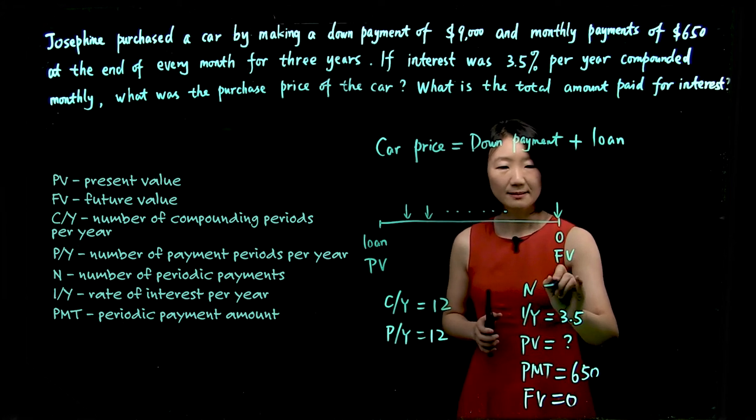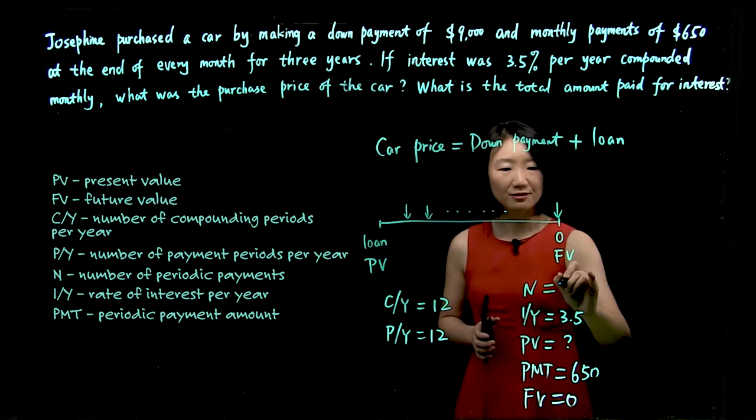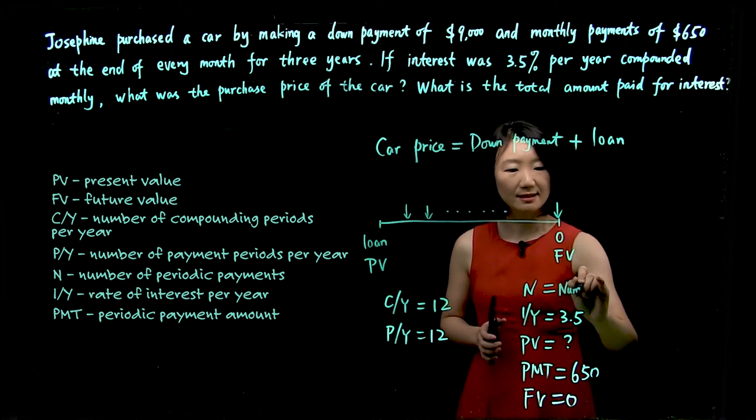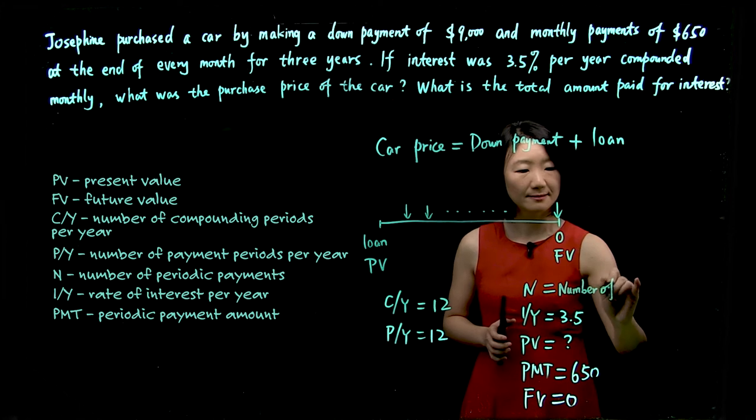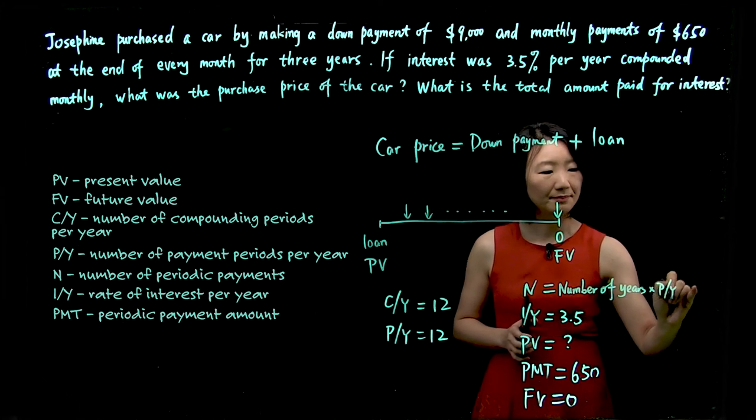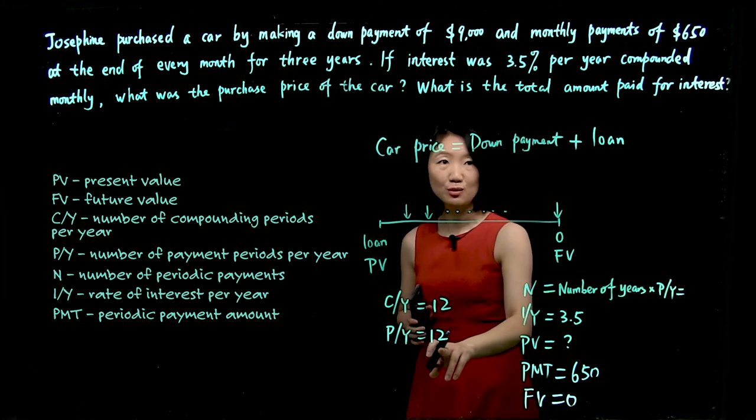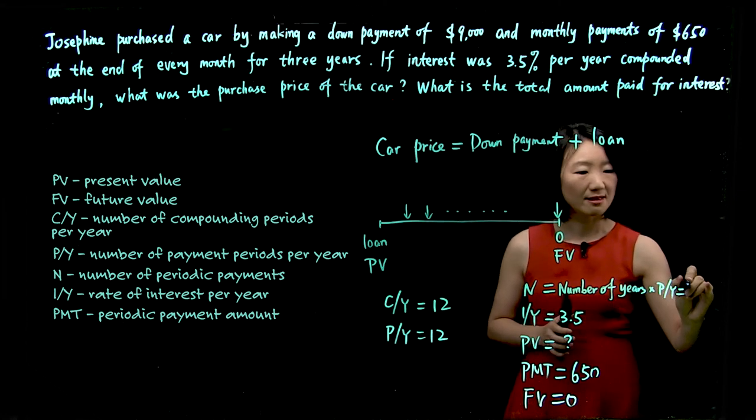N is number of periodic payments. So we'll follow the formula. N is number of years times PY. We know it's a three-year term, and PY is 12, so N is 36.